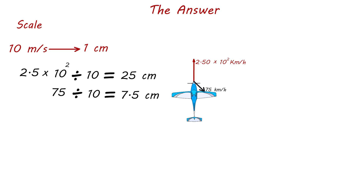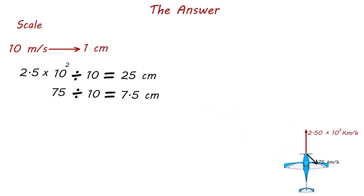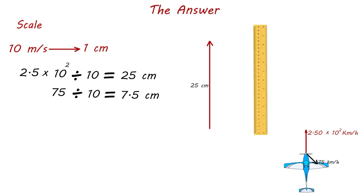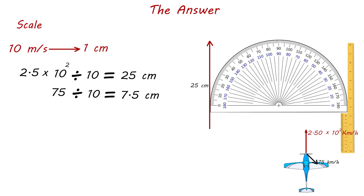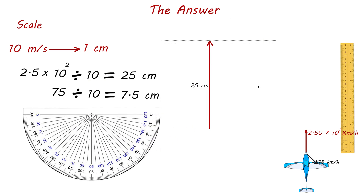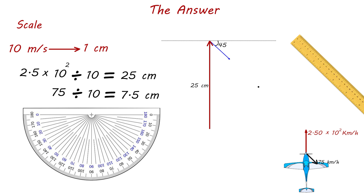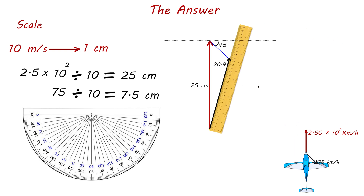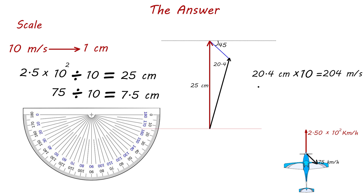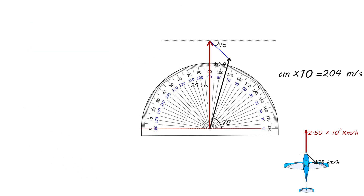The wind velocity of 75 kilometers per hour is equivalent to 7.5 centimeters. Its direction is southeast, which is 45 degrees below the x-axis. We draw the first vector of 25 centimeters pointing north, then use the protractor to mark 45 degrees below the x-axis and draw a line of 7.5 centimeters for the wind. We draw the resultant vector from the tail of the first vector to the head of the second. Using the ruler, we measure the resultant length and multiply by 10 to find the actual velocity, then use the protractor to measure its angle relative to the x-axis.